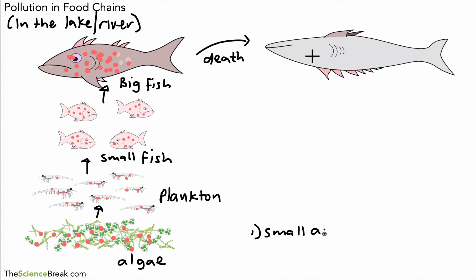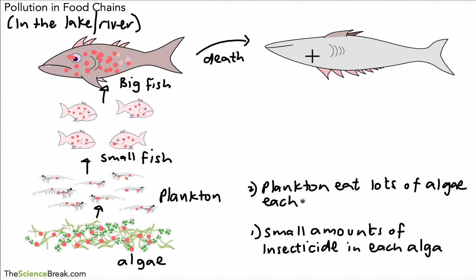After the insecticide has been washed into the water, we get small amounts of insecticide in this example in each alga. Alga is singular. Algae is plural. So we get small amounts in each alga. The plankton will eat lots of algae each. We then have the small fish. The small fish eat lots of the plankton.